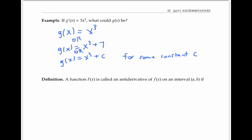A function capital F of x is called an antiderivative of lowercase f of x on an interval [a, b] if the derivative capital F prime of x is equal to lowercase f of x on that interval [a, b]. In other words, we can think of little f as being the derivative of the function capital F.